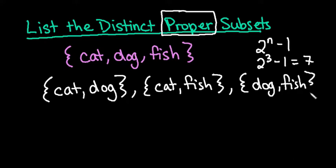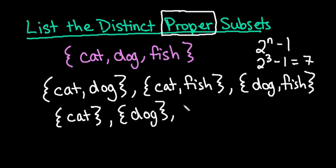And then once you're done with all of the pairs that can be formed with this, then you would just list the single elements. So we could have the set just containing cat, we could have the set just containing dog, or we could have just fish.